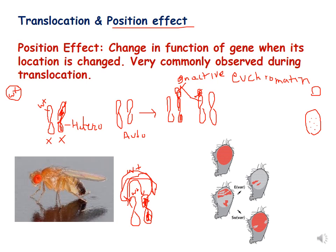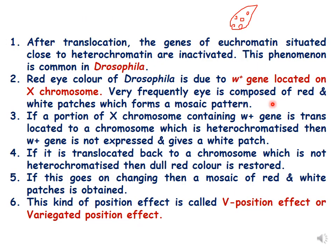To summarize the key points: after translocation, genes of euchromatin situated close to heterochromatin are inactivated — this is called position effect. This is commonly observed in Drosophila. The red eye color of Drosophila is due to the W+ gene located on the X chromosome, and very frequently the eye is composed of red and white patches forming a mosaic pattern.